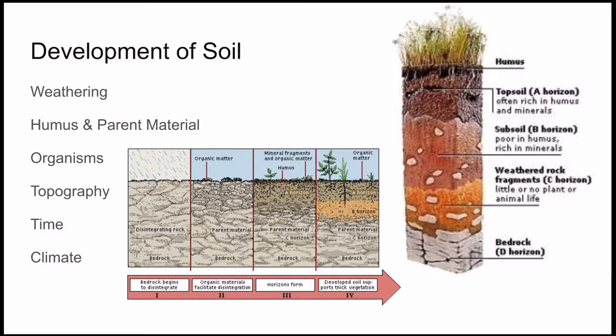Soil develops due to a number of factors. The organisms that live there determine how the humus forms. The topography of the location will affect the soil too — for example, mountain soil is generally of poor quality because water rushes down and takes away a lot of the nutrients. How long the soil has been forming affects how thick each of the profiles are. The original parent material — the rock and mineral fragments that make up the soil — determines the color, how permeable, and the different chemical properties of the soil. And finally, climate: the average temperature and rainfall influences the weathering rate of the soil.